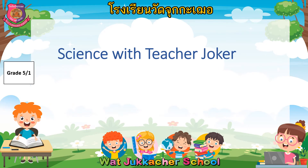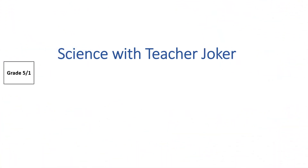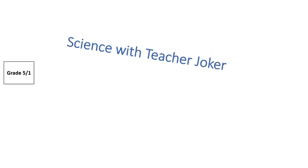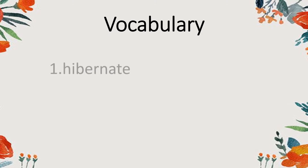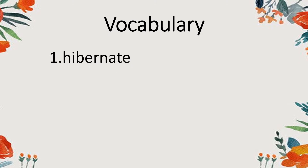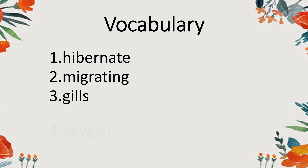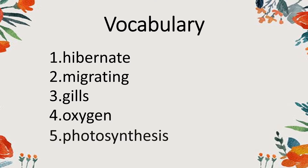Good morning class. This morning we're going to study science and continue our activity from last time, which is about the environment. Before we start our lesson for today, I would like to show you the vocabulary for this day. The five vocabulary words are: hibernate, migrating, gills, oxygen, and photosynthesis. We need to study these first before we proceed with your activity.